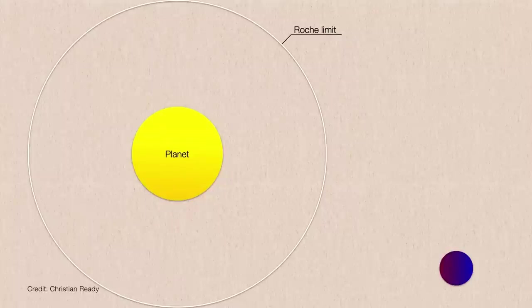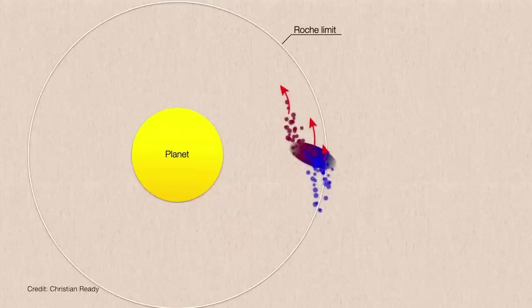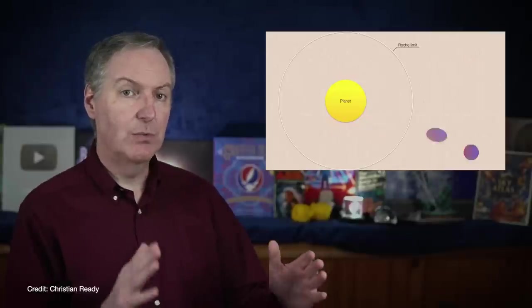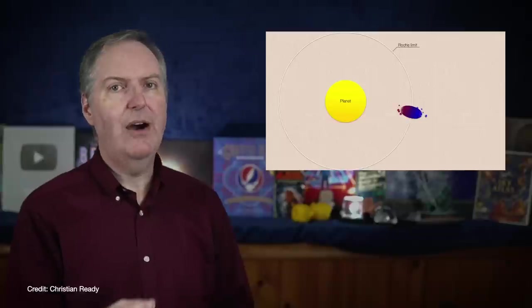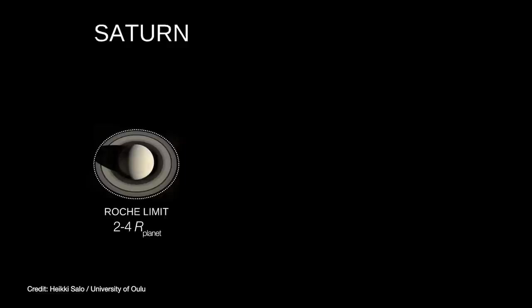You see, rings are thought to form when a small body like a moon gets too close to its planet. At some critical distance from the planet, tidal forces exerted on the moon become so strong that the moon gets ripped apart and forms a ring. And this critical distance from the planet was first calculated by French astronomer Édouard Roche in 1848. Now exactly what distance the Roche limit is depends on how dense and how rigid the moon is relative to its planet. But for a typical moon around a planet, the Roche limit typically works out to a distance of between two and four planetary radii.